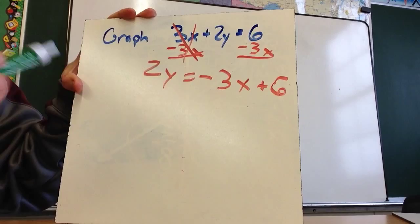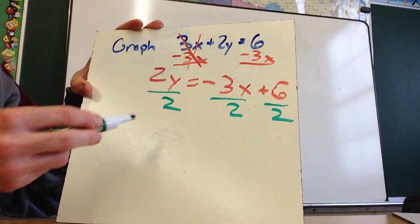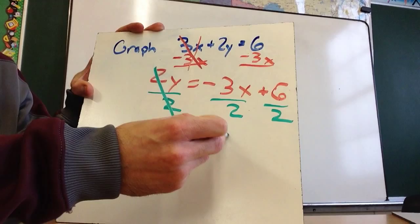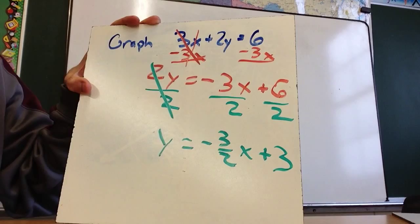So I now need to divide everything by 2. And I want you to notice that I have to divide everything by 2, not just this part. And so now this will cancel out. So I'm now left with y equals, this is negative 3 over 2x plus 6 divided by 2, this is 3.